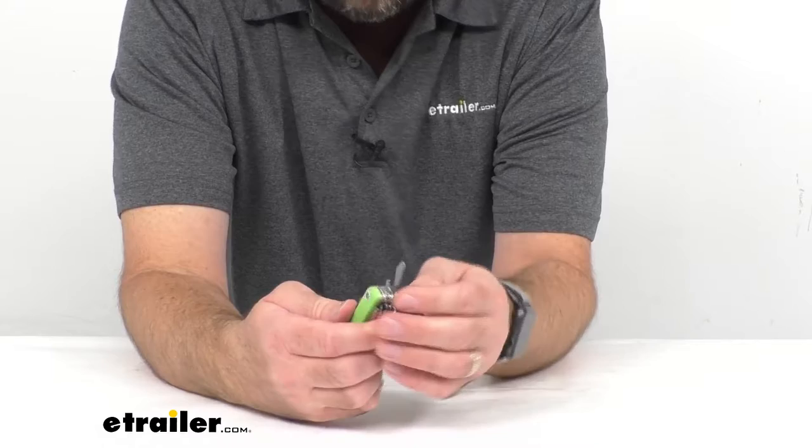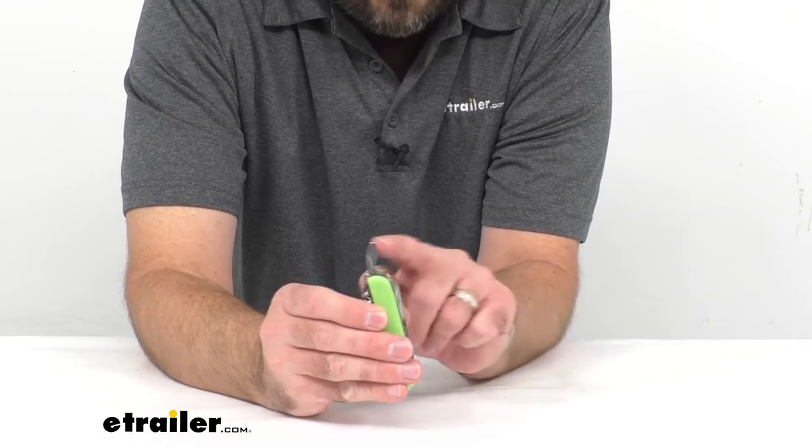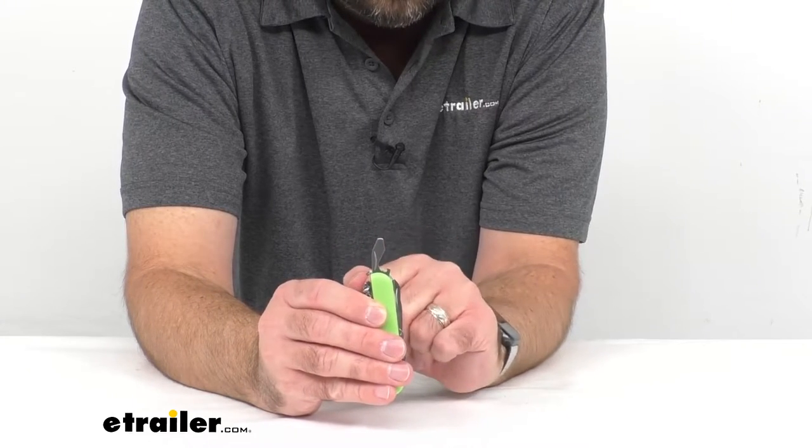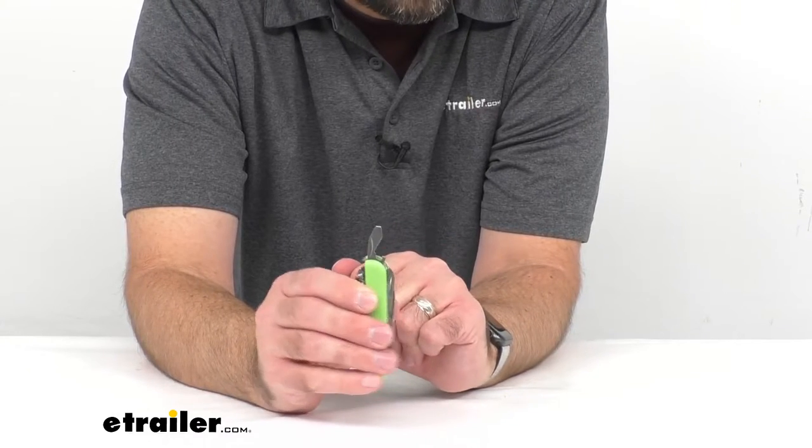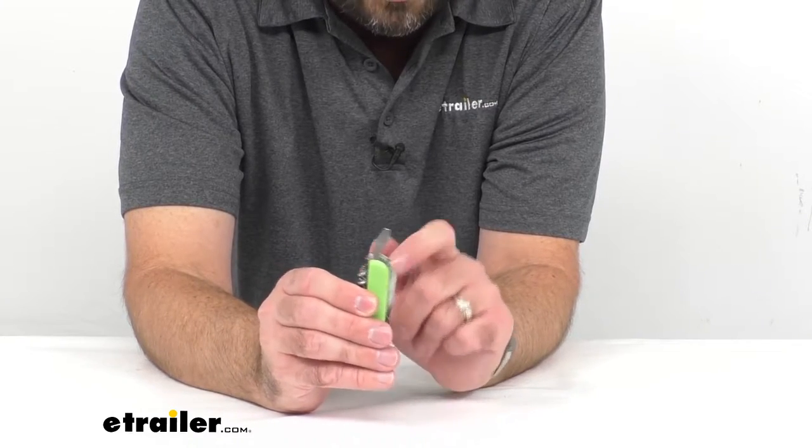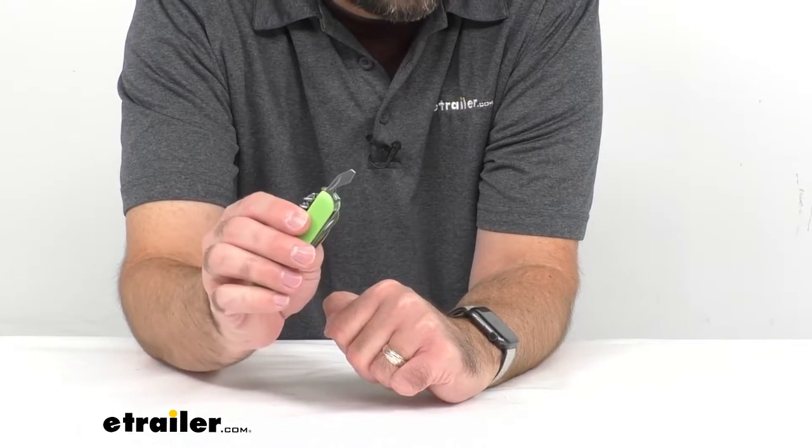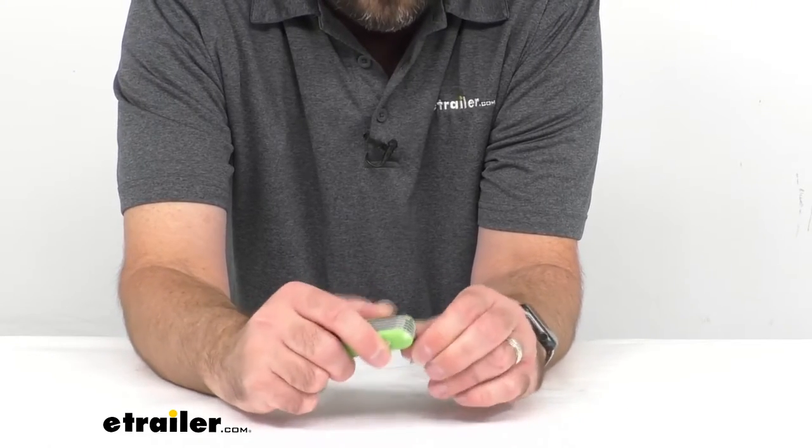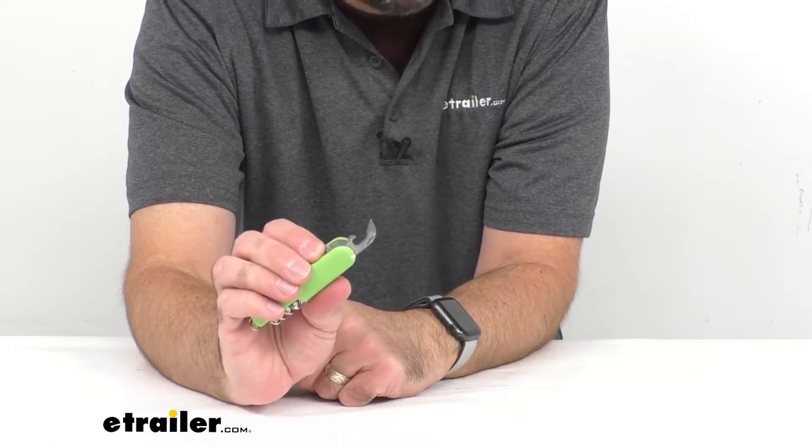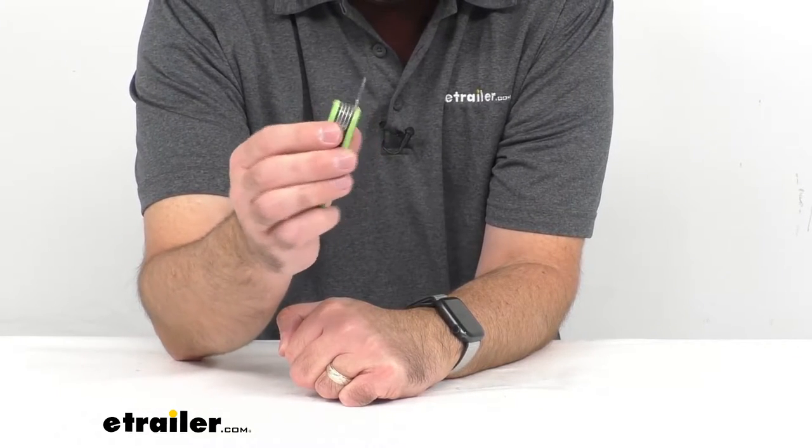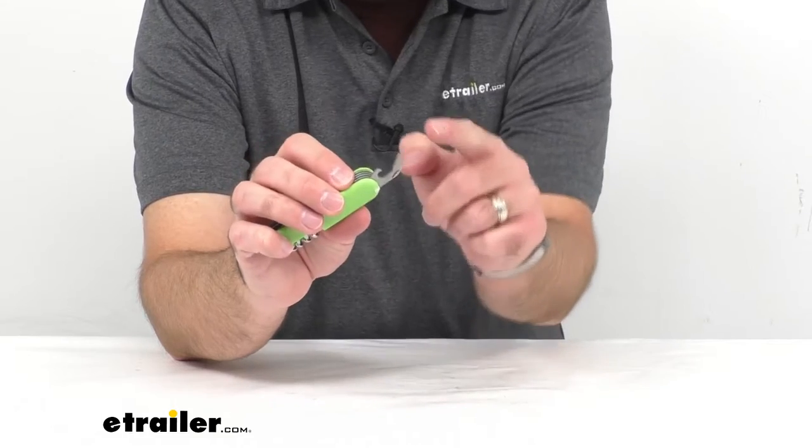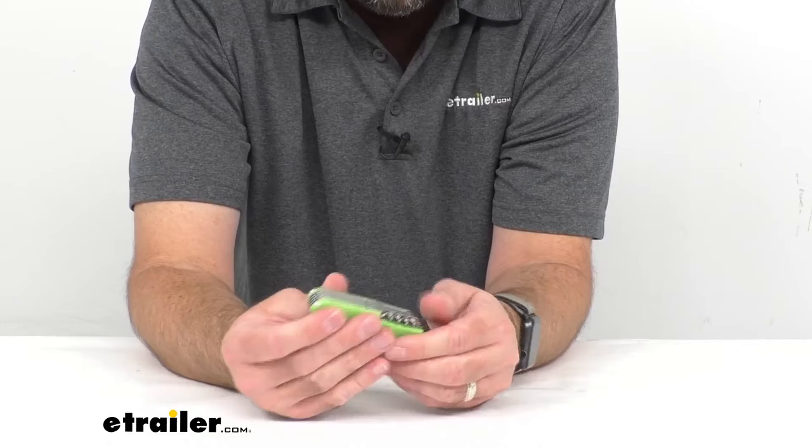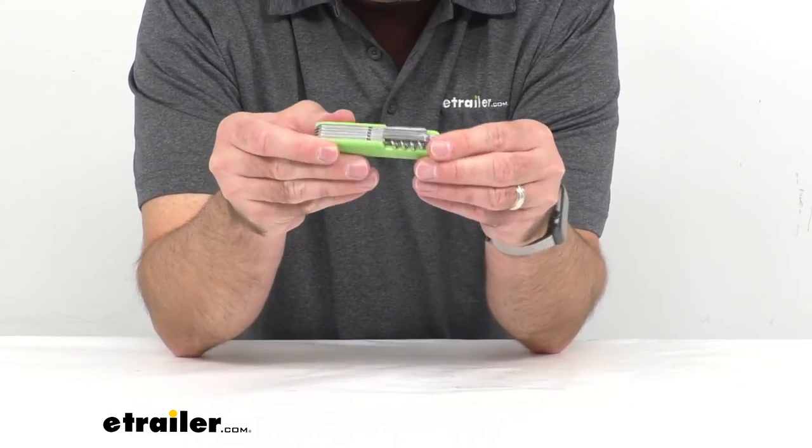Finishing out this side of the knife, we have our medium head straight slot screwdriver that can also be used in some cases for a Phillips head screw, and then of course a combination bottle opener as well. The last function on this side of the knife is a nice can opener. You can use this to open your cans of tuna or cans of soup. It has a nice aggressive point there to get right into the top of that can.